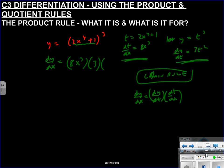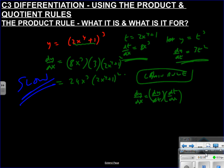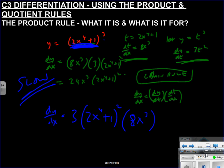Since we didn't start with t's, we don't finish with t's — so substitute back: 2x⁴ + 1, giving 24x³(2x⁴ + 1)². But remember, that's the slow way. The fast way: treat (2x⁴ + 1)³ like x³, which differentiates to 3x², so we get 3(2x⁴ + 1)², then multiply by the derivative of the inside: 8x³.